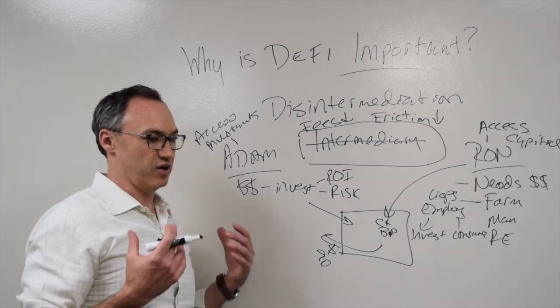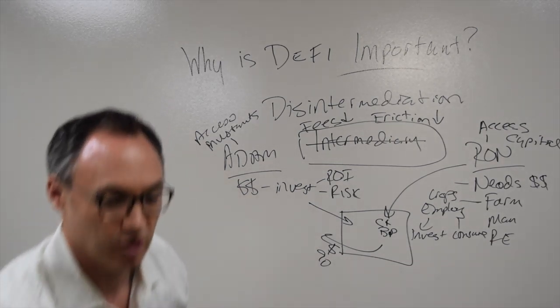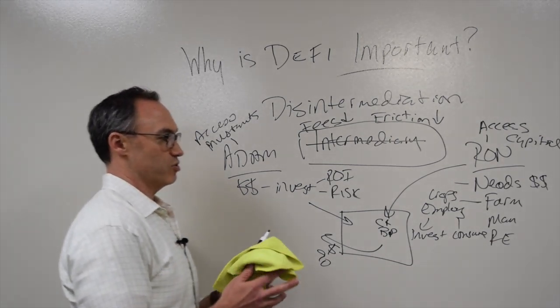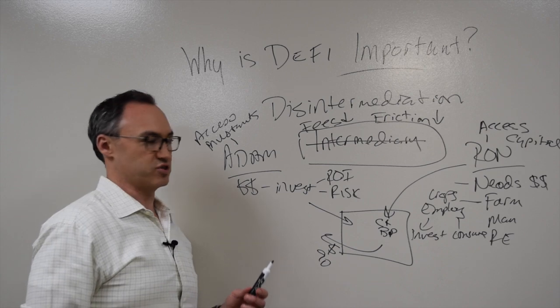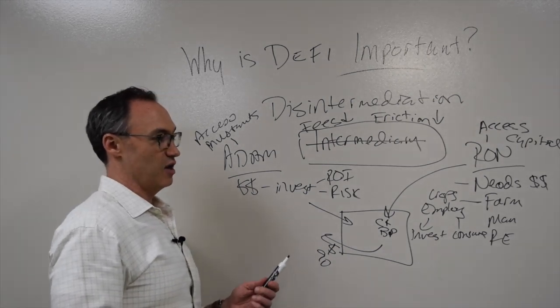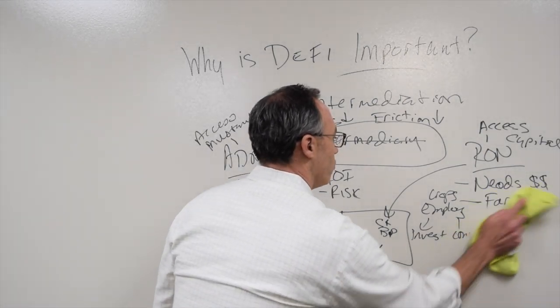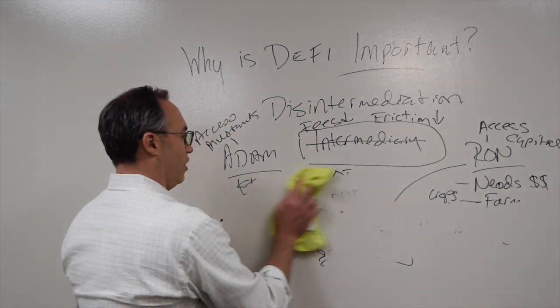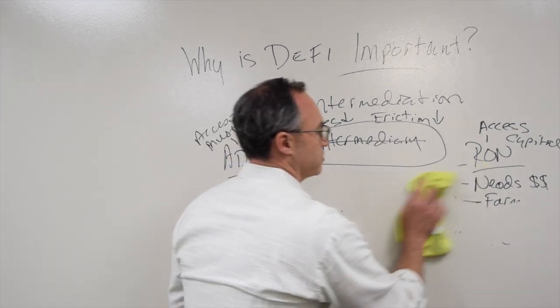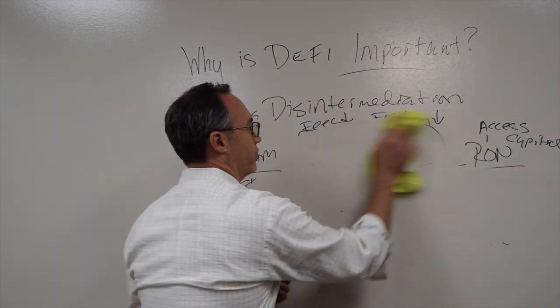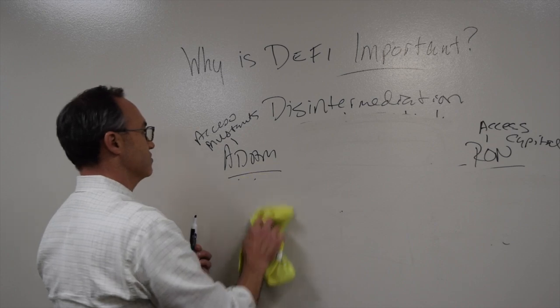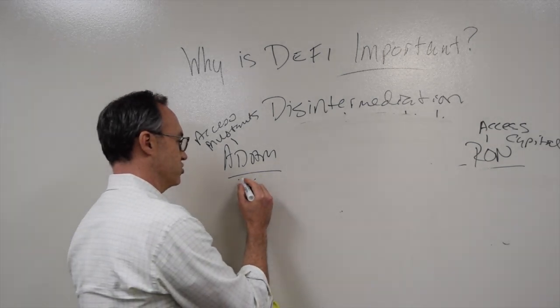But what if I'm the typical investor who just says, look, I just want a higher return on my investment. Or Ron is the typical business owner maybe here in the U.S. or some other developed nation that says, I just want to raise a whole bunch of money to go invest in real estate. Well, a lot of this is really the same because Ron still has a certain access to capital, and Adam still has the capital and a certain access to investments.